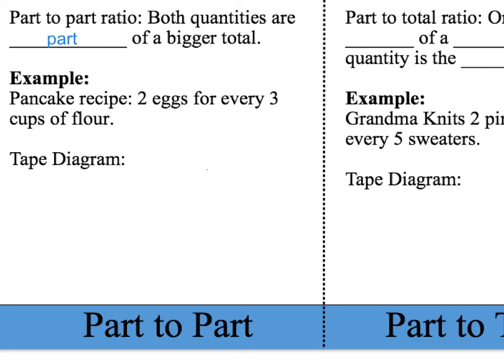For a part-to-part ratio, both quantities are part of a bigger total. An example is a pancake recipe: two eggs for every three cups of flour. Those two ingredients are both part of the recipe — eggs are part of the recipe, and flour is part of the recipe. I can write a ratio comparing these two quantities, and I see the words 'for every,' so I know it's a ratio.